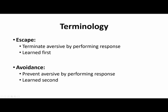The second step is avoidance — when you can actually prevent that aversive stimulus from happening by performing a response in advance. This is learned second because you have to learn the escape part first, then learn that something is telling you of the upcoming delivery of something aversive so you can do a behavior in advance to avoid it happening. In the fire alarm example, maybe you notice your toast is burning and you know you have a sensitive fire alarm, so you grab a towel and flap it under the alarm to keep it from getting smoky and setting it off.